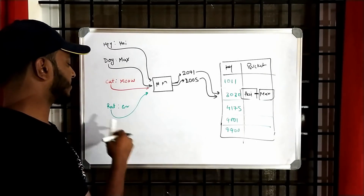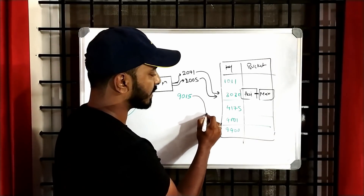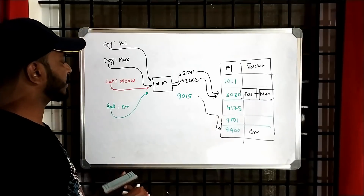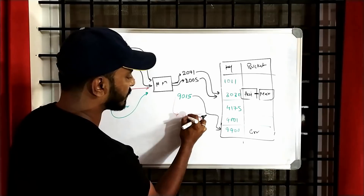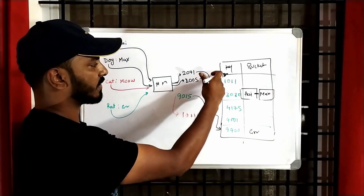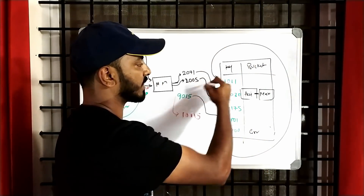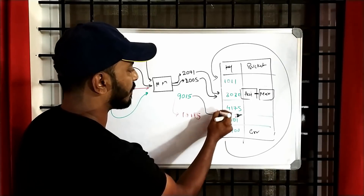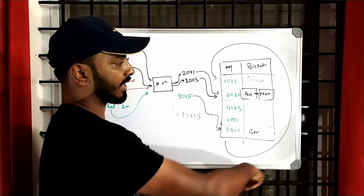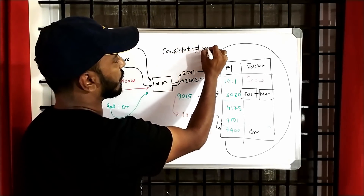Continuing the examples: if we want to save a key that hashes to 9015, we go and find the next available bucket key — which is 9101 — and save grr there. For cat with value meow, say the hash is 10115. We search for a bucket key greater than 10115 but there are none available since our largest is 9900. So because of the ring structure, we go back to the very first row and save it there. So cat's value meow is saved at the first location. This is the ring happening — this is how the consistent hash ring works.